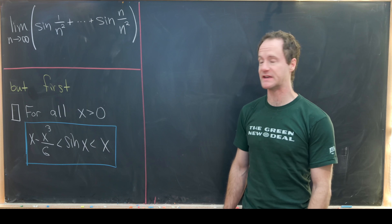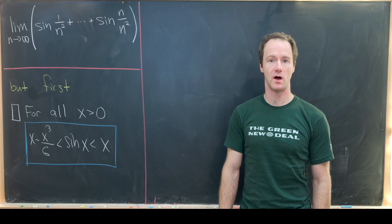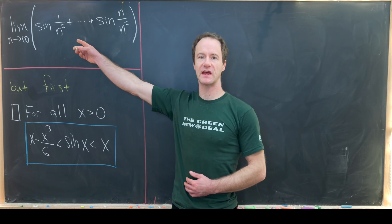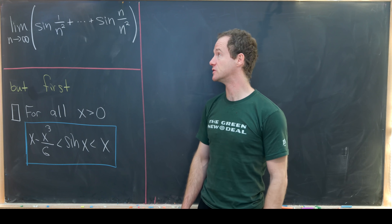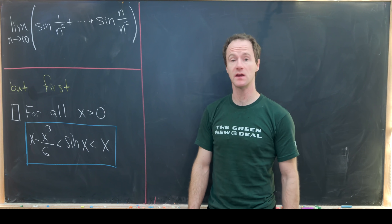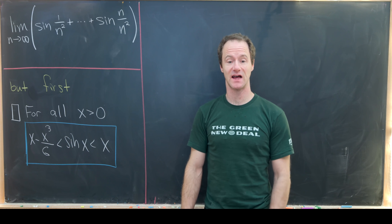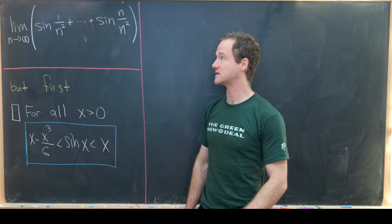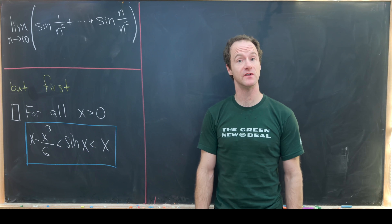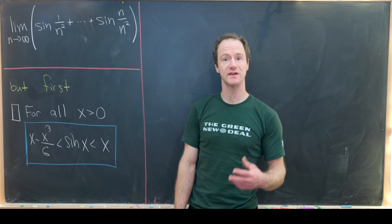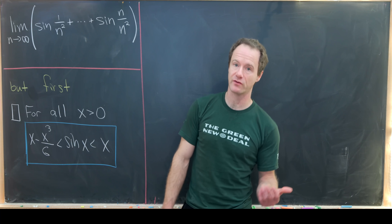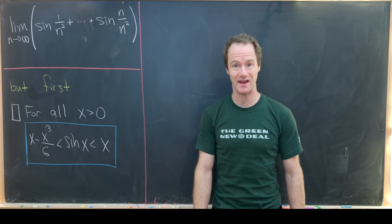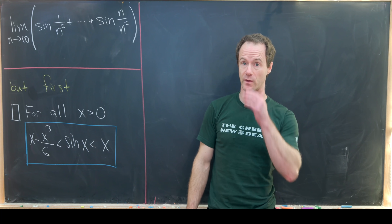Today I've got a nice limit to share with everyone. We want to calculate the limit as n goes to infinity of sine of 1 over n squared plus sine of 2 over n squared plus sine of 3 over n squared, all the way up to sine of n over n squared.